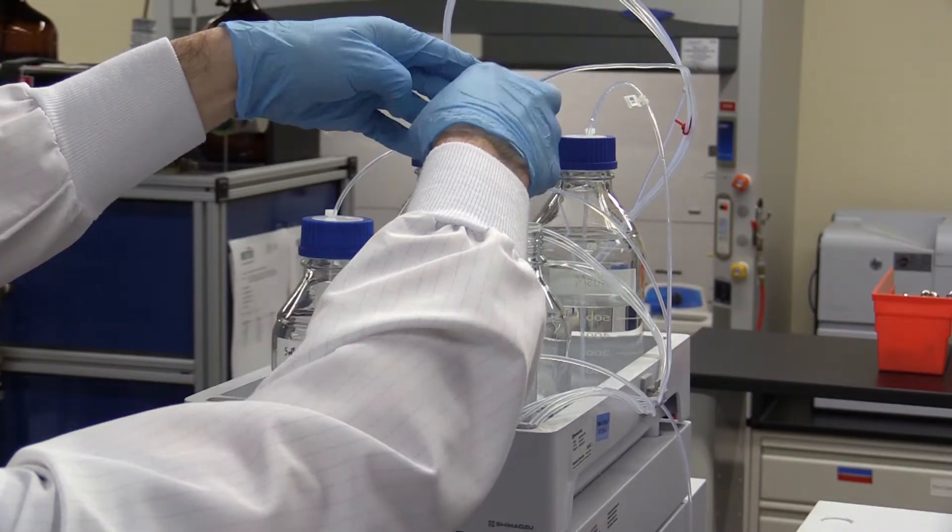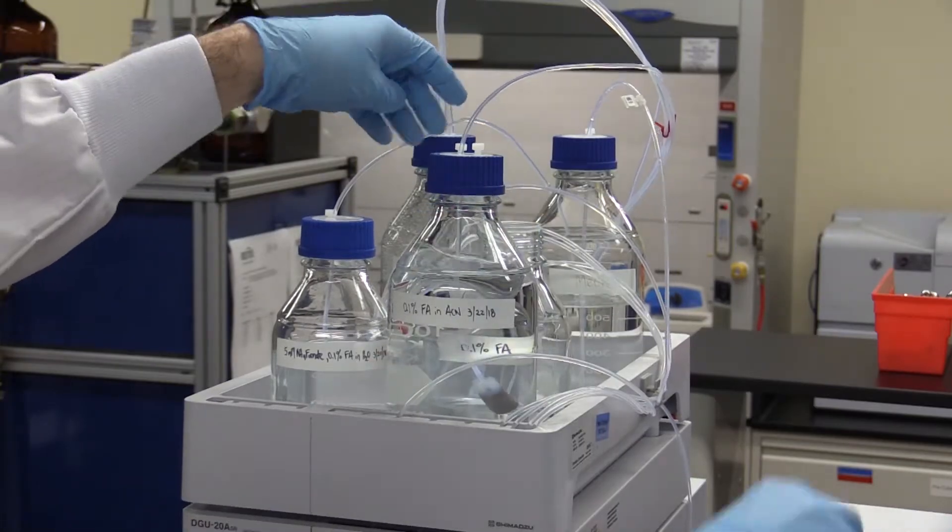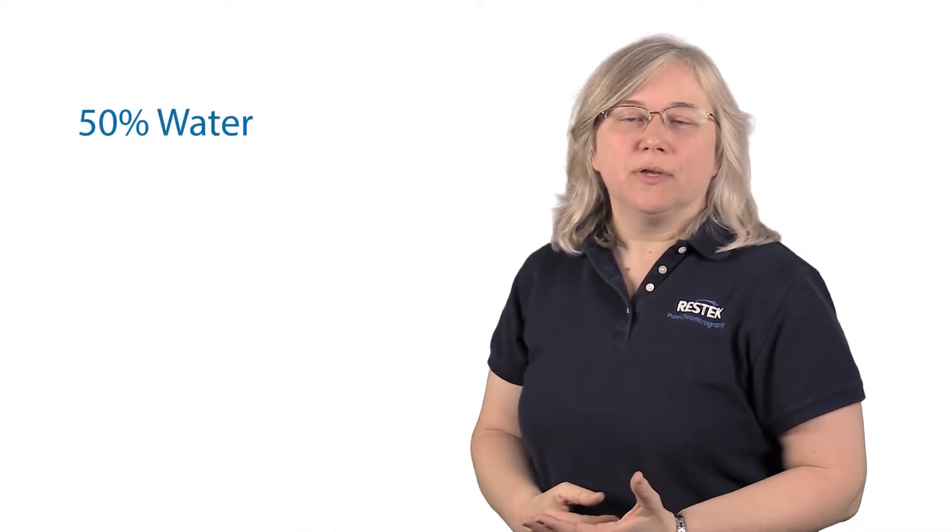And for short term storage, like a couple of days, it's okay to leave this solvent in the column. If you're storing for a longer time, like a week or more, you flush initially as mentioned before and then you prepare a storage solvent with 50% water and 50% organic matching the solvent that you used in your method. Flush for another 10 to 20 column volumes.